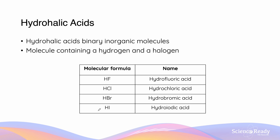A hydrohalic acid is a particular type of binary inorganic molecule. It's a molecule which contains a hydrogen and a halogen. Here we have a table which contains examples of hydrohalic acids such as HF, HCl, HBr, and HI.